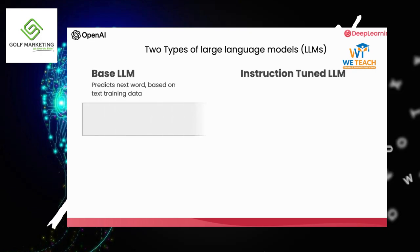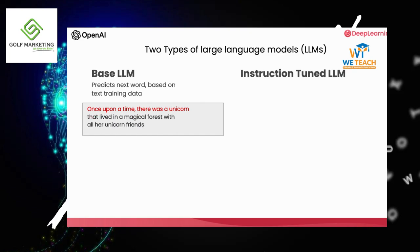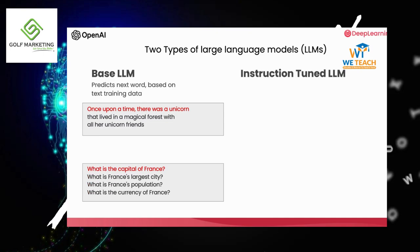For example, if you were to prompt this with 'once upon a time there was a unicorn,' it may complete this by predicting the next several words are 'that lived in the magical forest with all unicorn friends.' But if you were to prompt it with 'what is the capital of France,' then based on what articles on the internet might have, it's quite possible that the base LLM will complete this with 'what is France's largest city, what is France's population,' and so on — because articles on the internet could quite plausibly be lists of quiz questions about the country of France.